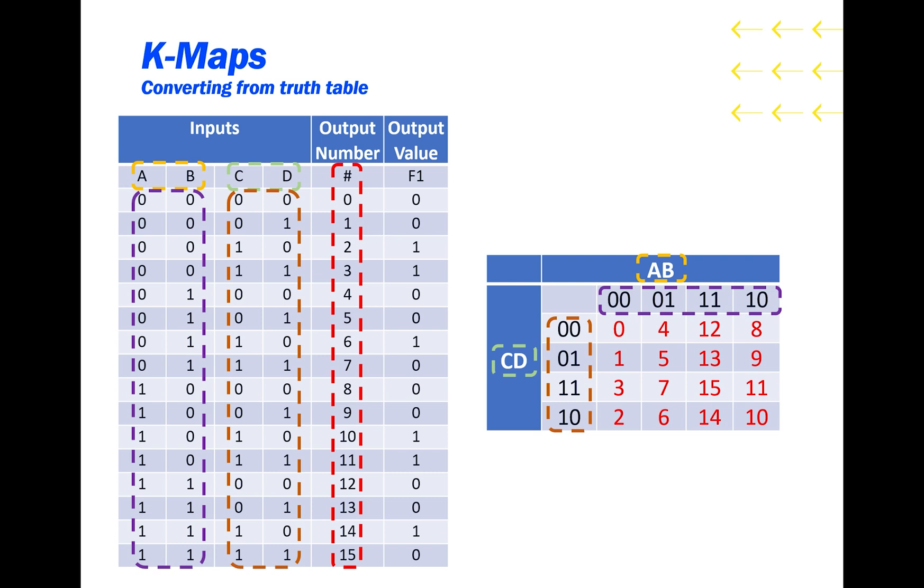Here I've replaced all of them with the output numbers. If I wanted to get output number 6, I would have to look for 0, 1, 1, 0, 6 in binary. And that's right here. Of course, normally you don't put the output numbers on a truth table, and you don't put them on a K-map. Instead, you just put the output value. And here we can see all of the output values in the proper spaces.